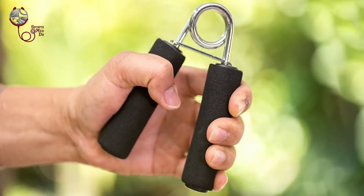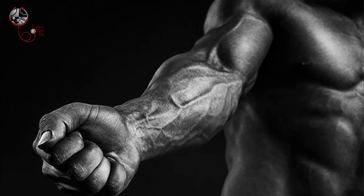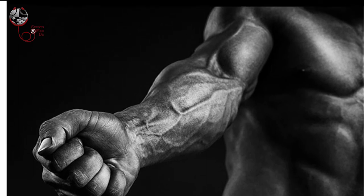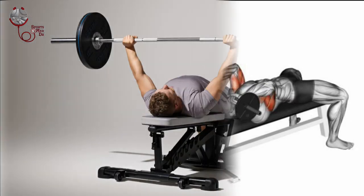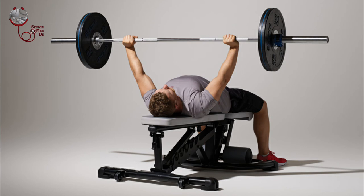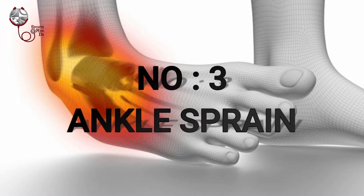Pro tip: strengthening the forearm through dedicated forearm exercises will reduce the incidence of injuries like tennis elbow. Most cricketers do push-ups, crunches with weights, bench press, and everything — but very few people do actual forearm strengthening exercises. They need to focus a lot on forearm exercises on both ends, and that reduces the incidence of injury.